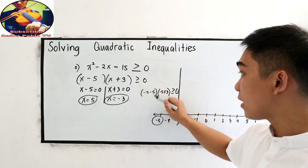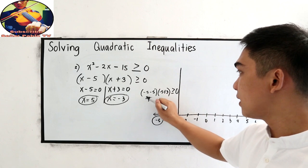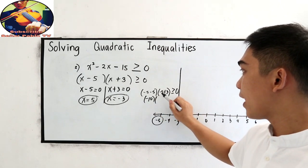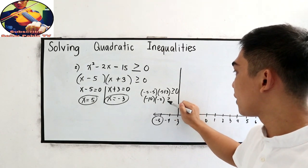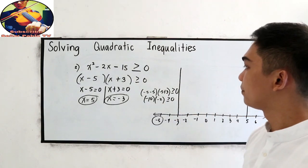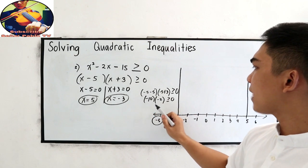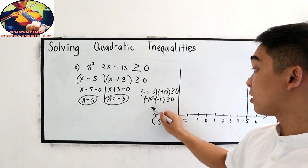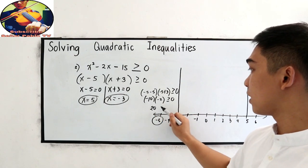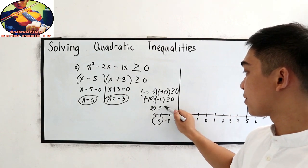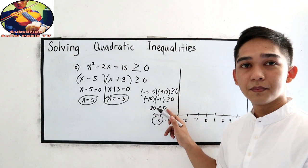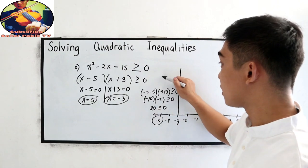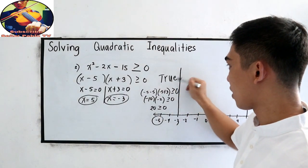Negative 5 minus 5, this is negative 10. Negative 5 plus 3, that is negative 2, greater than or equal to 0. Negative 10 times negative 2, this is 20, positive 20, greater than or equal to 0. Is 20 greater than 0? Yes. That means this is true.